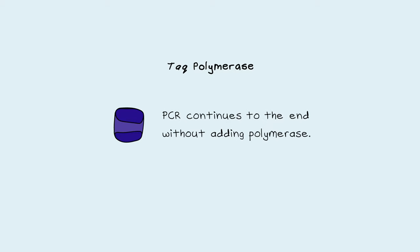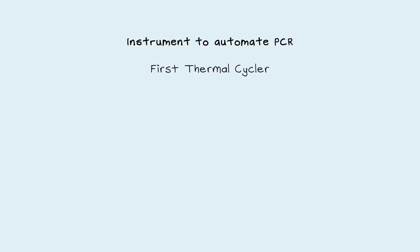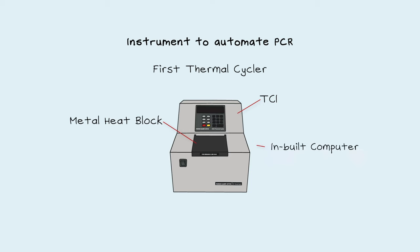CETIS also created an instrument to automate PCR. The first thermal cycler, the TC1, automated heating and cooling using a metal heat block and an inbuilt computer. This automation made the process of PCR far easier.